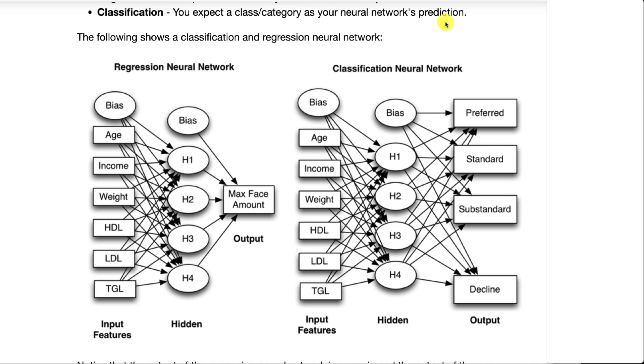Classification neural networks produce classes. We might have preferred, standard, substandard, or decline. That just puts the potential insurance applicant into the correct bucket.